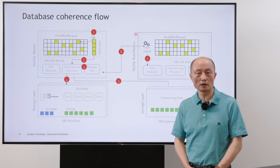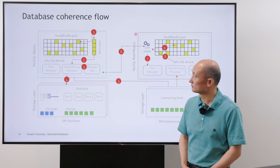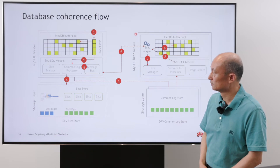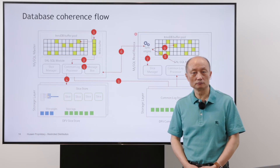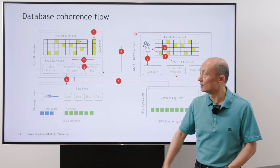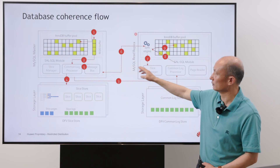Now let's look at how the primary and replica sync up data updates, and why the replication lag is small for GaussDB. Steps 1 to 4 are the same as before — the redo logs are persisted. In step 5, the SAW module parses the redo log and extracts transaction info and page updates for each transaction. In step 6, the sync engine contacts the read replica. The replica reads the updated LSN and other metadata from the master, then updates the local slice manager. In step 8, it reads redo logs from the common log store, generates a new page version if the page is already in the buffer pool, or invalidates the pages. The GaussDB replication lag is very small because the communication message between the master and the replica is very small in volume.